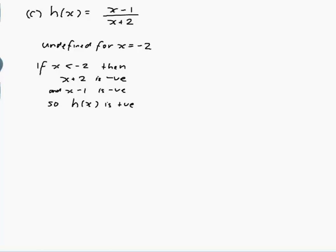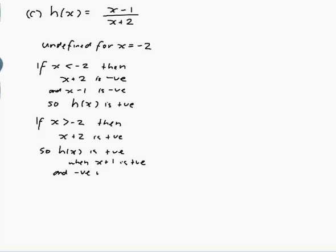If x is greater than minus 2, I should see where it crosses the x-axis. If x is greater than minus 2, then x plus 2 is positive. So h of x is positive when x minus 1 is positive and negative when x minus 1 is negative.